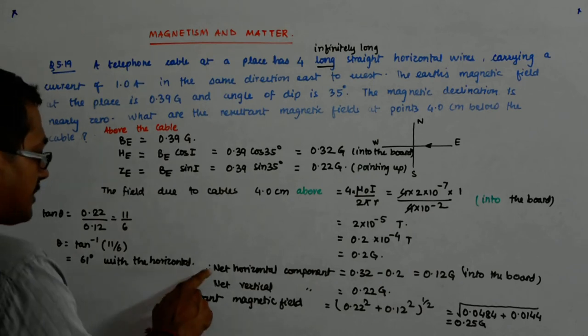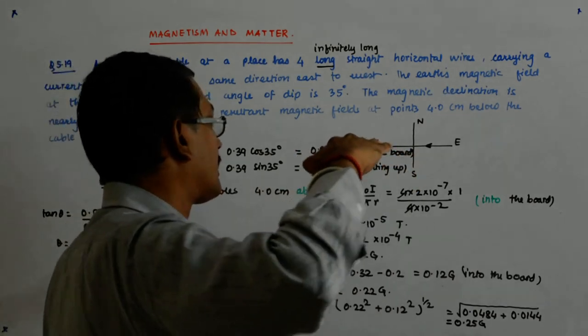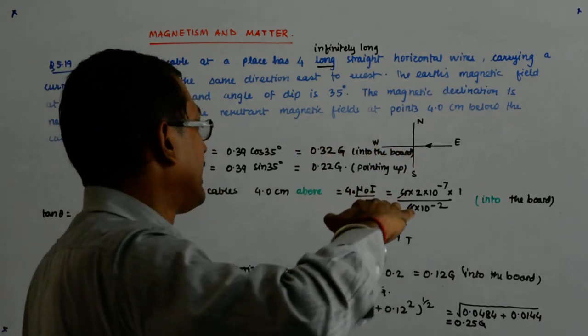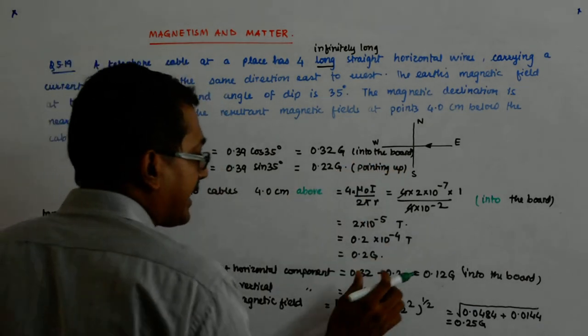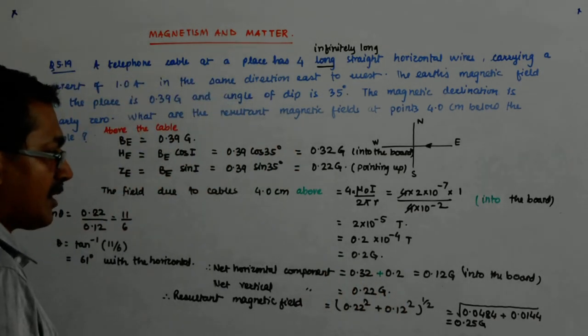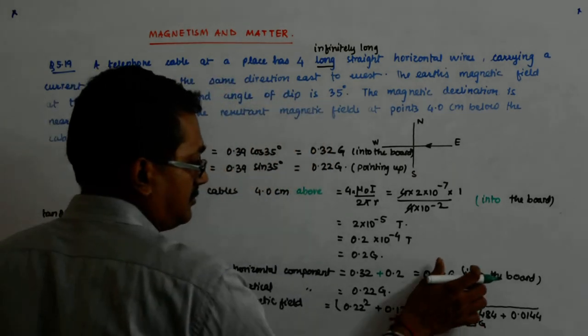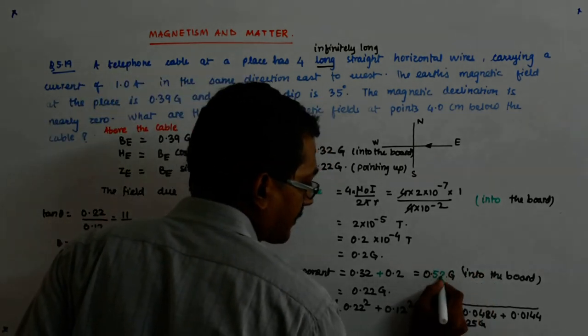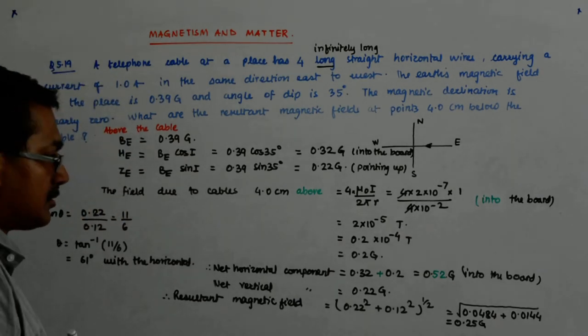Now, what happens? Therefore, net horizontal component, since my horizontal component here is also into the board and here, this 0.2 G is also into the board, they will get added up. And hence, become 0.52 Gauss. Understand? That is, into the board.